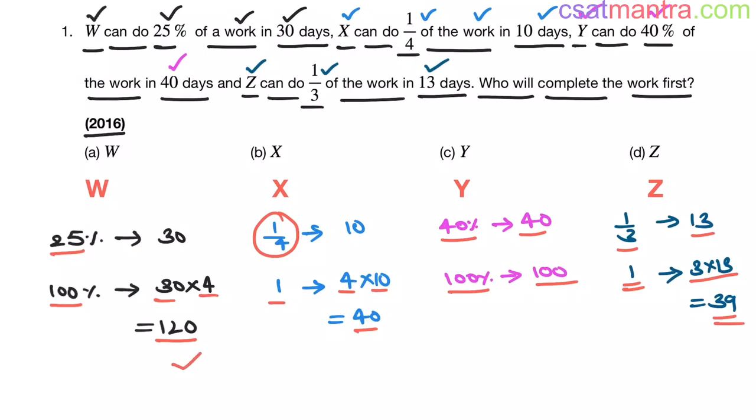So W completes the work in 120 days, X completes the work in 40 days, Y completes the work in 100 days, Z completes the work in 39 days. So Z completes the work fastest my friends. So our answer is D.